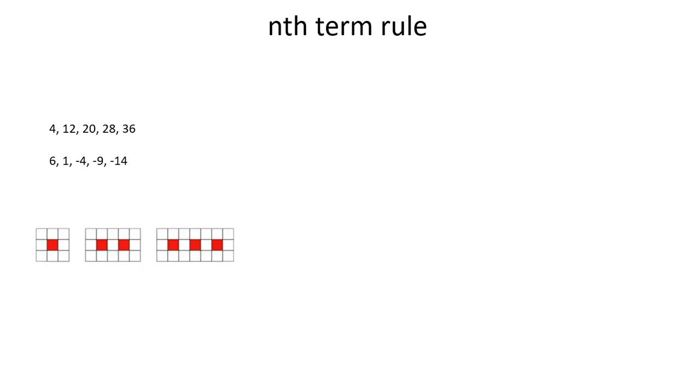So the first thing is you have to realize that they're very similar to times tables. So if you look at this, 4 to 12 goes up by 8, and then by 8 again, and by 8 again. So it's a bit like the 8 times table, which goes up by 8 each time. And the 8 times table would be written out as 8n. So wherever you are in the times table, 1 times 8, 2 times 8, 3 times 8, yes.